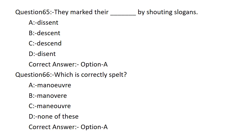They marked their dash by shouting slogans. Option A: DESCENT. Option B: DESCENT. Option C: DESCENT. Option D: DESCENT. Option A is the correct answer. They marked their DESCENT by shouting slogans.